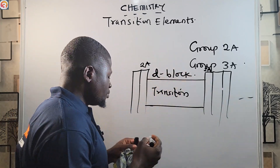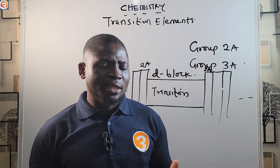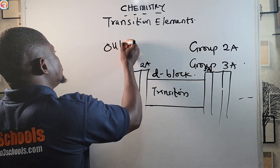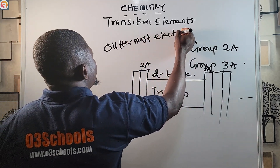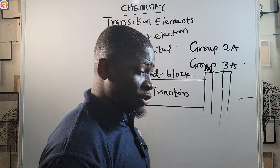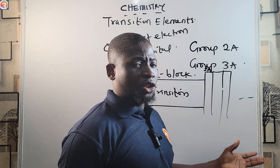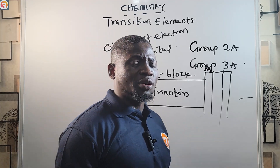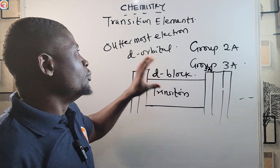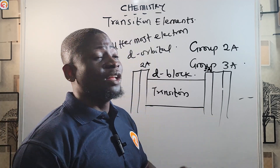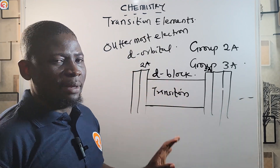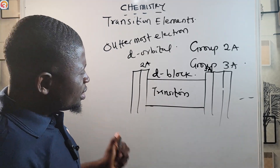Why are they called the d block elements? They are called d block elements because their outermost electrons reside in the d orbital. I'm going to show you the first 10 transition metals and their electronic configurations, and you will see that for all transition metals the outermost electron is in the d orbital — that's why they are called d block elements.